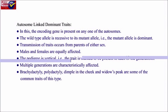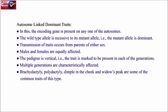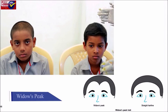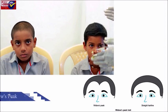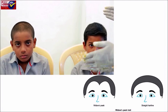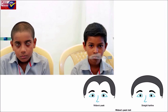Multiple generations are characteristically affected. Brachydactyly, polydactyly, dimples on the cheek, and widow's peak are some common traits of this type. Widow's peak is a hairline that forms a distinct peak as it crosses the forehead. It is a dominant trait; thus, homozygous dominant or heterozygous individuals have widow's peak, whereas homozygous recessive individuals have straight hairlines.